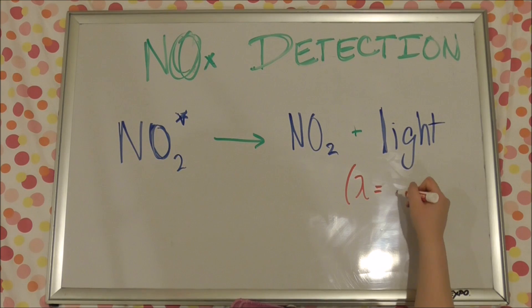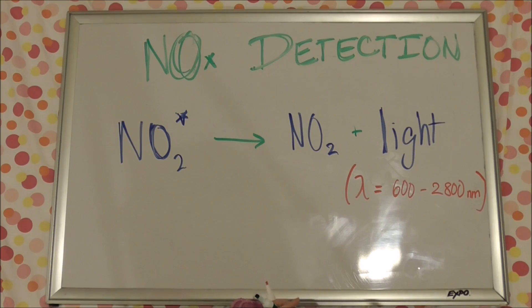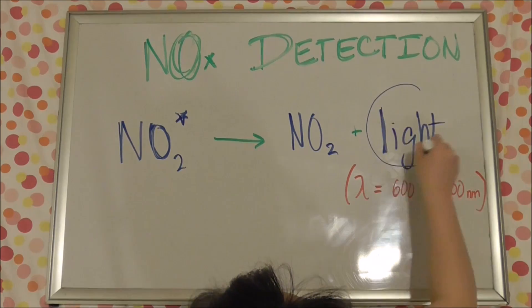This wavelength is usually emitted at 600 to 2800 nanometers, which is light in the red or infrared range of the light spectrum.